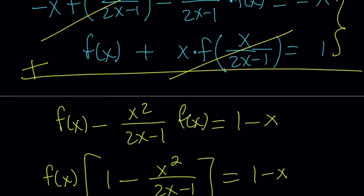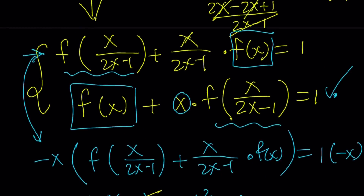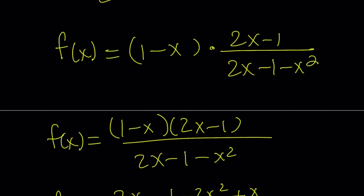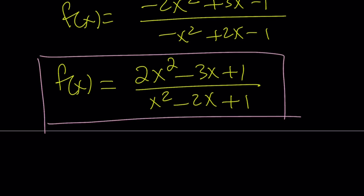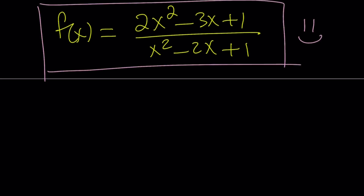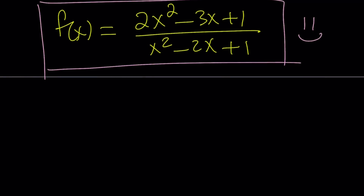There's another way to approach the problem — not recommended — where instead of eliminating f of x over 2x minus 1, you eliminate f of x, find f of x over 2x minus 1, and then recover f of x by replacing x with x over 2x minus 1, the inverse of the same function. That's a roundabout way to do it. If you plug the answer into the original problem, you'll see it actually works. That brings us to the end of this video. Thank you for watching — please comment, like, and subscribe. See you tomorrow with another video. Be safe, take care, and bye bye.